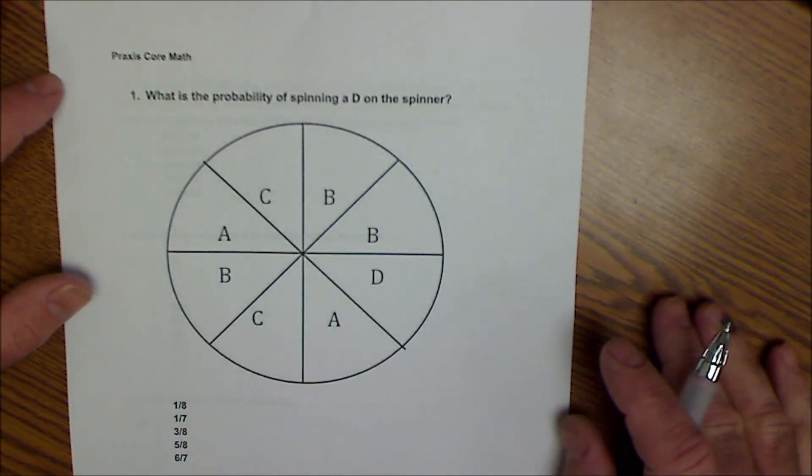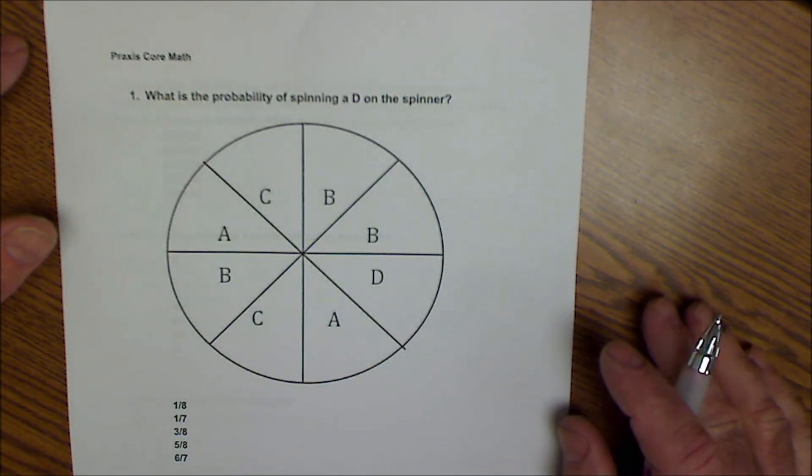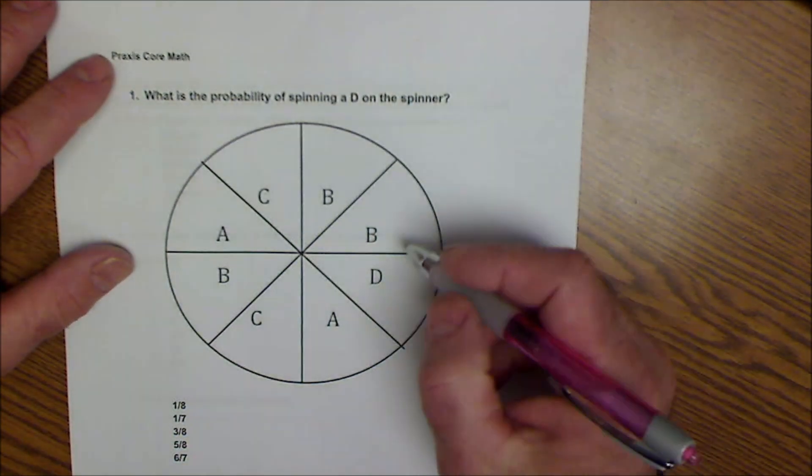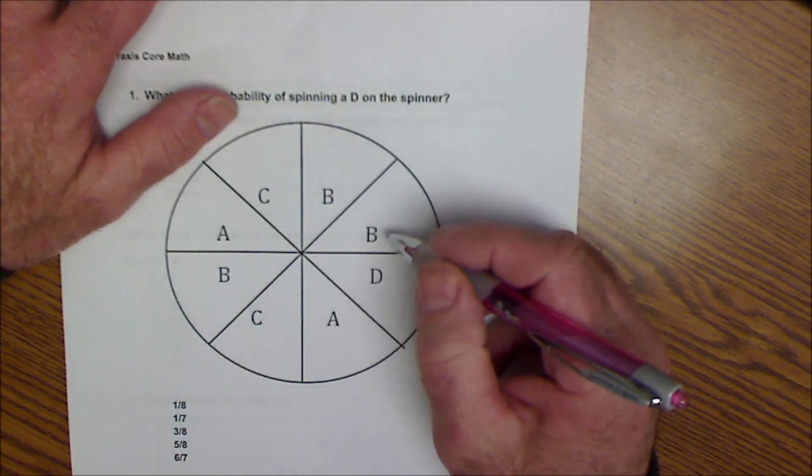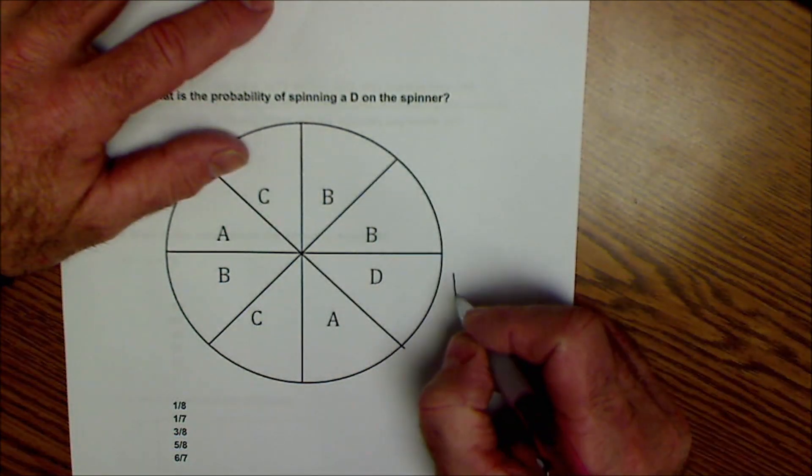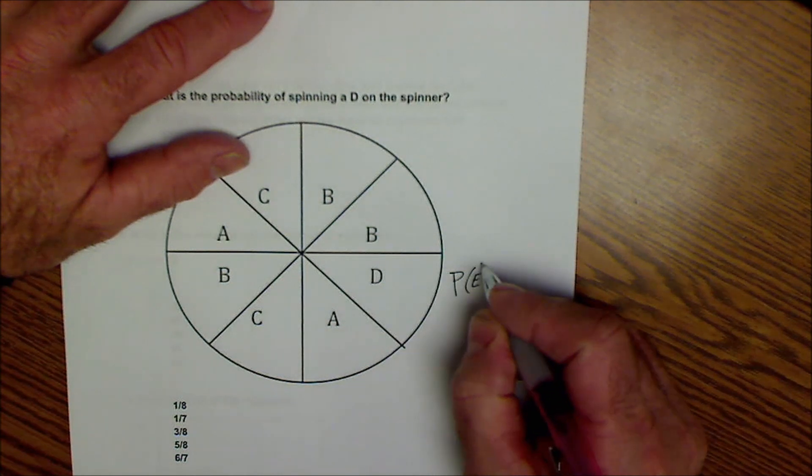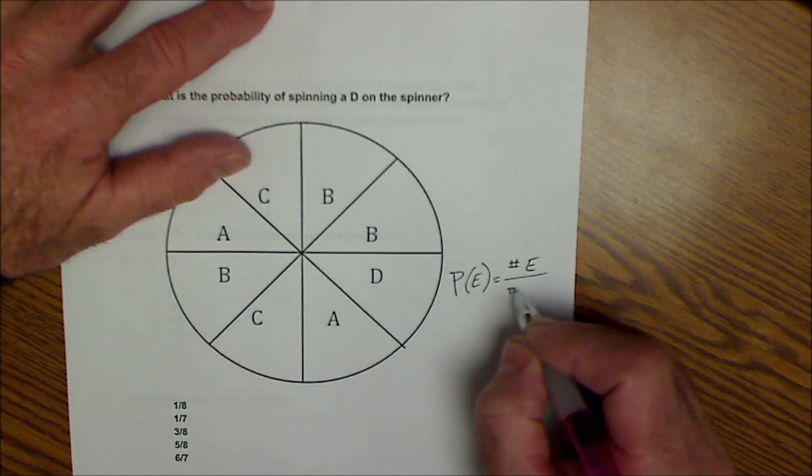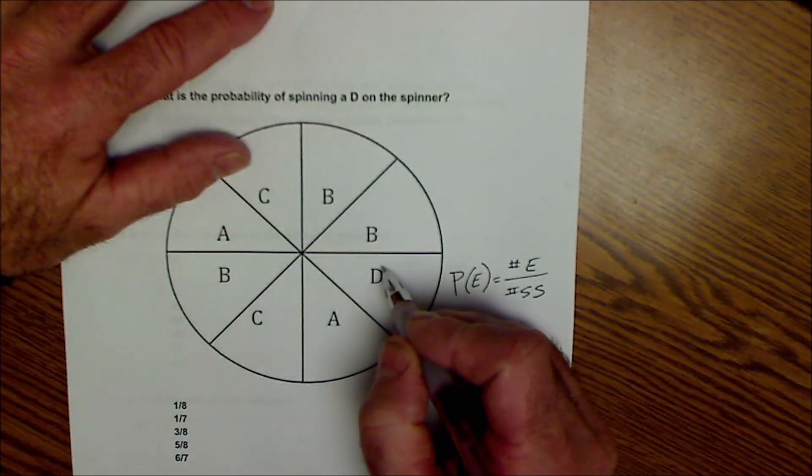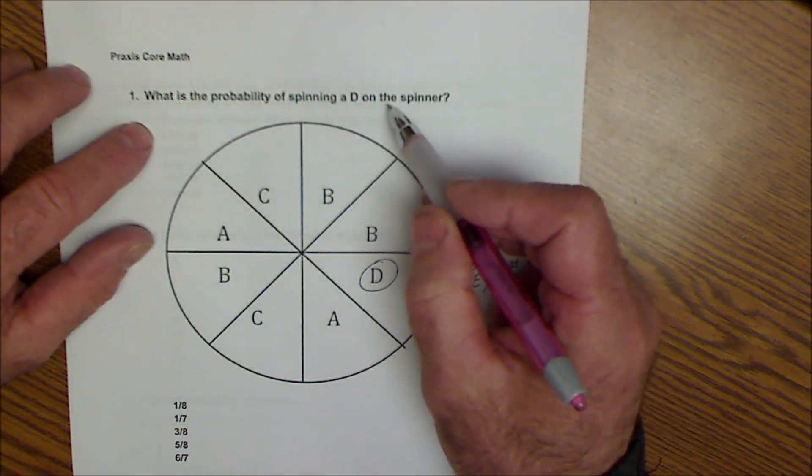Okay, so let's get started here on number one. What is the probability of spinning a D on the spinner? So I have a circle with eight equal pieces. The definition of probability of any event is the number in the event divided by the number in the sample space. So I only have one D on the spinner.